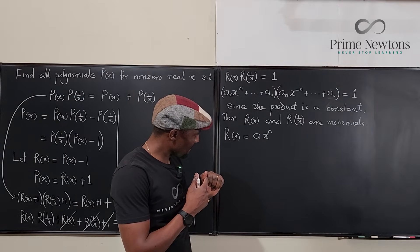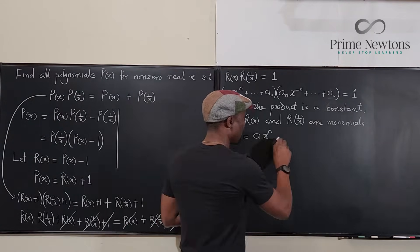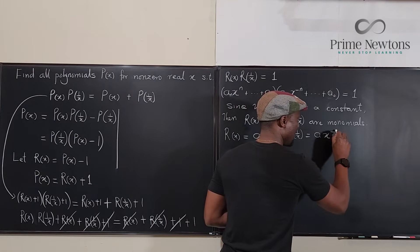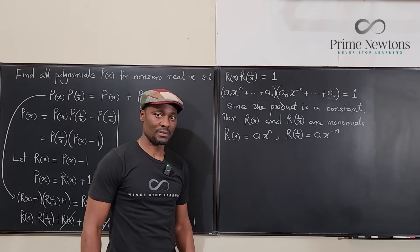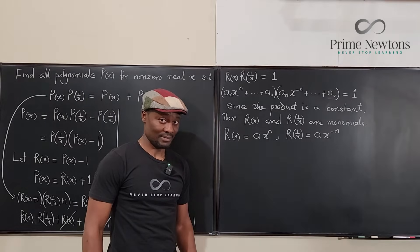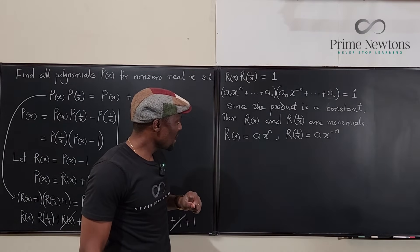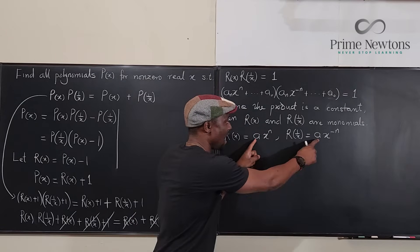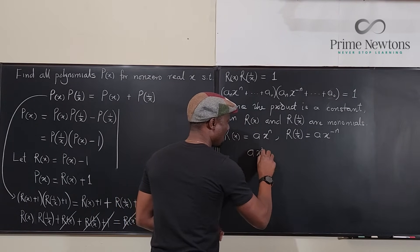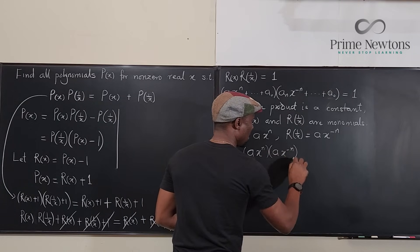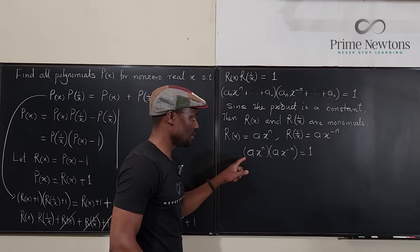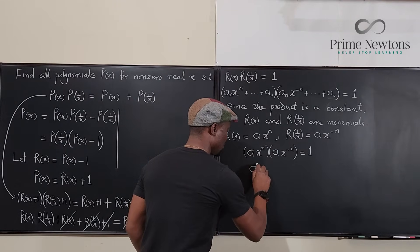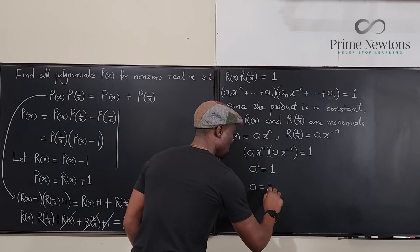We also have that R(1/x) is the same thing but with x^(−n) instead of x^n. So now, multiplying: a·x^n times a·x^(−n) equals 1, which gives a² times x^(n−n) = a² = 1. Therefore a = ±1.